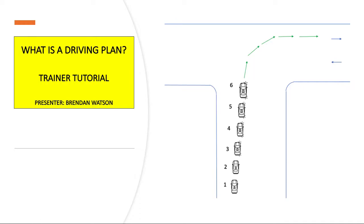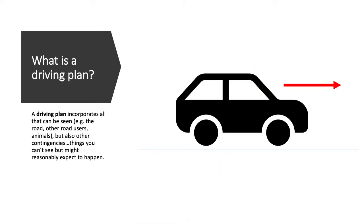Hi, this is Brendan from Wado Training, and in this tutorial we take a look at the question: what is a driving plan? A driving plan incorporates all that can be seen, for example the road, other road users, animals, but also other contingencies — things you can't see but might reasonably expect to happen.